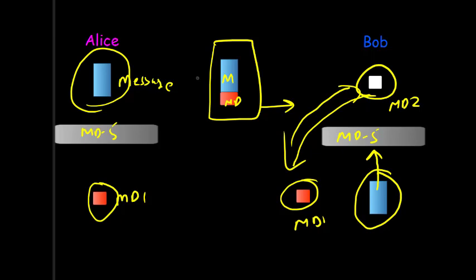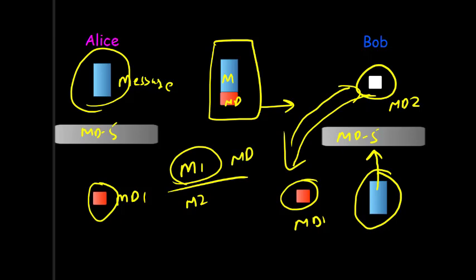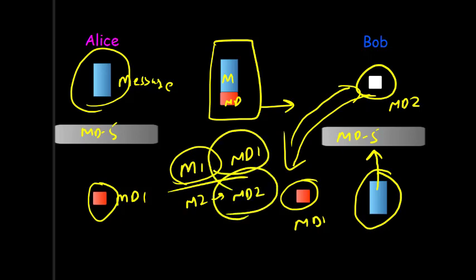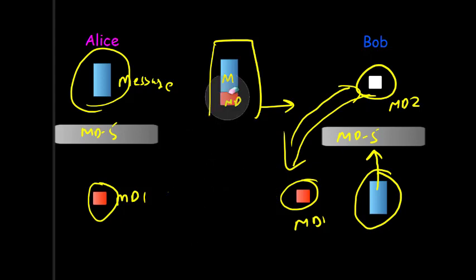Now suppose Bob calculates the message digest and gets MD2. If MD2 equals MD1, then there is no change in the message. The idea here is that for any two separate messages M1 and M2, if we calculate their message digests we get MD1 and MD2 respectively, and these will be totally different. No two different messages will have the same message digest.